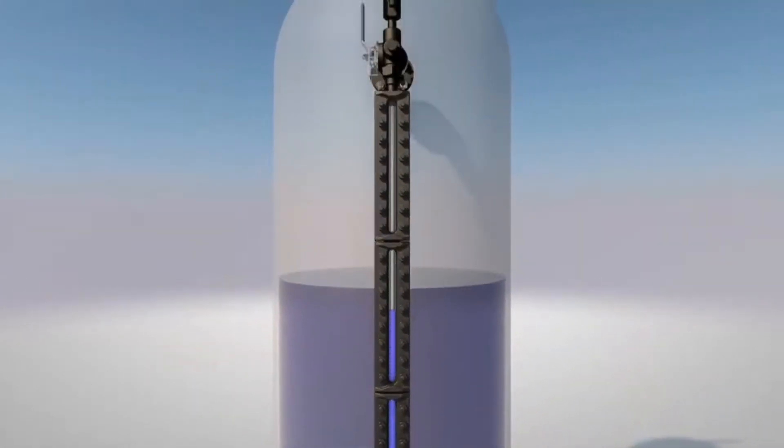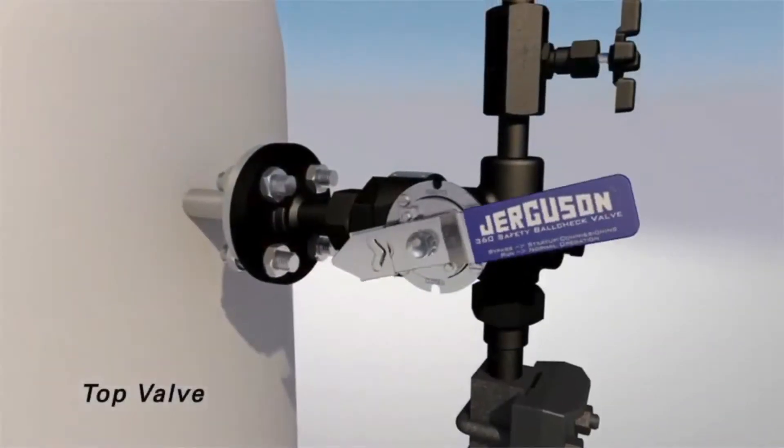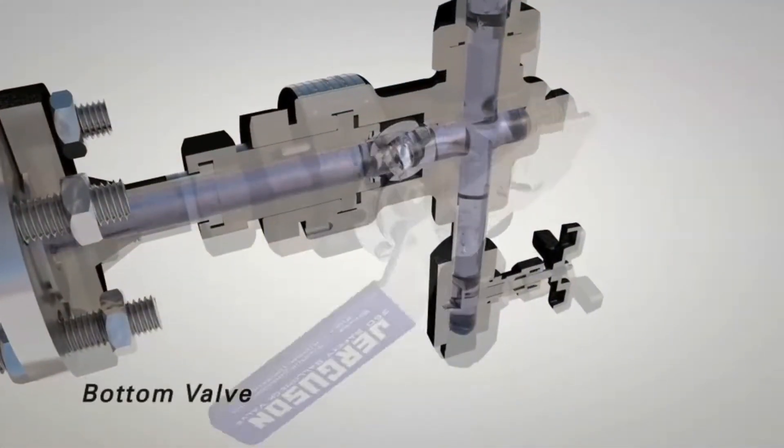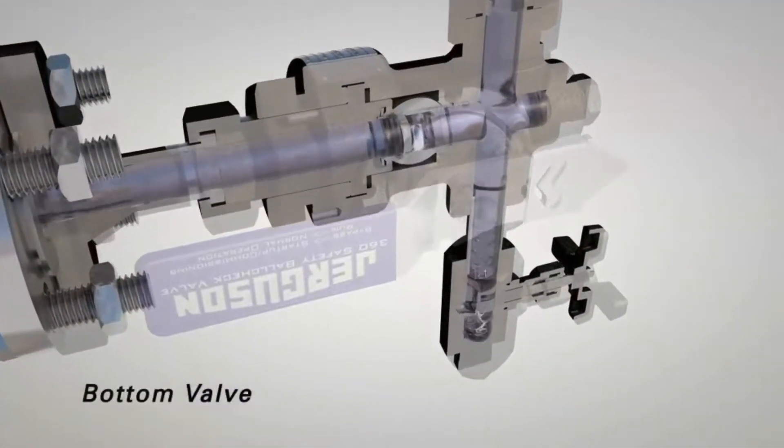Once the level stops rising, move the top valve to the run position then the bottom valve. The valve is now ready for normal operation.